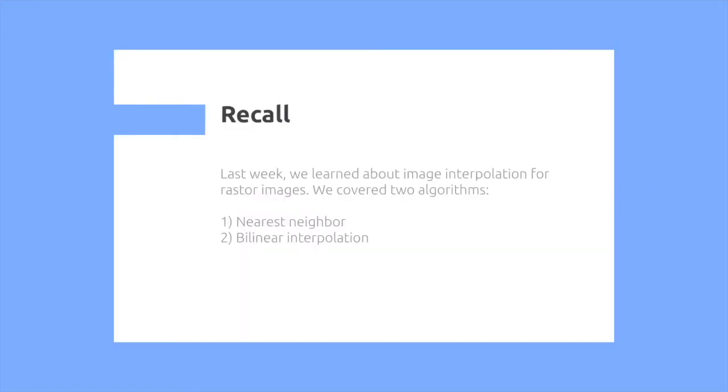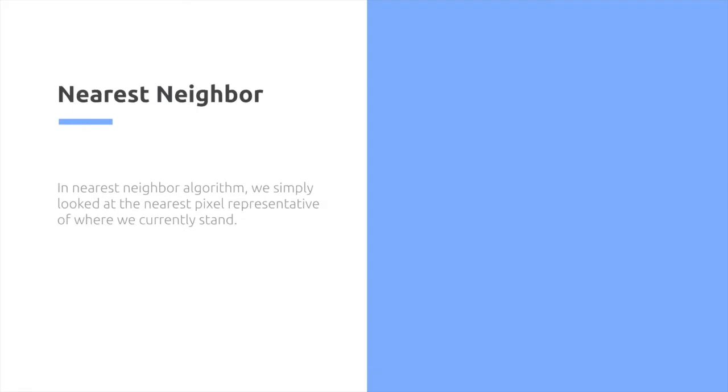So last week we learned about image interpolation for raster images. We covered two algorithms. First, we covered the nearest neighbor, and then we covered bilinear interpolation.